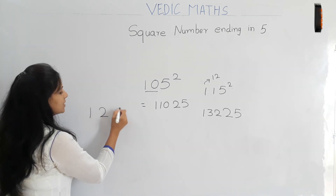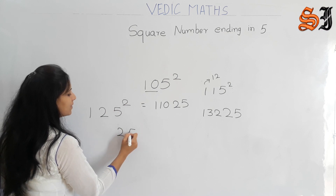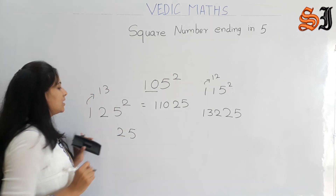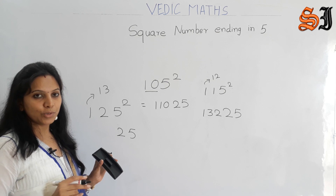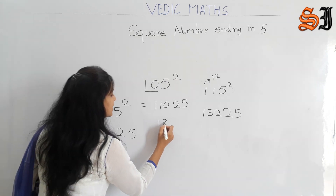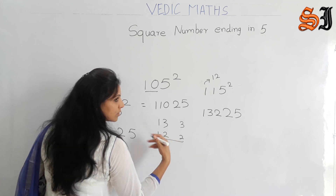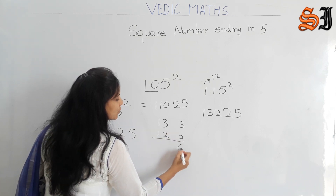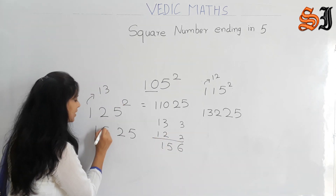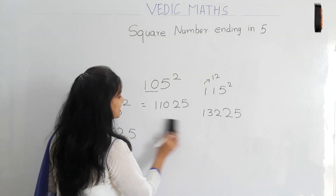For 125 squared: 5 squared is 25. Then 12 and 13: 12 into 13 is 156. So 125 squared is 15625. Is that easy?